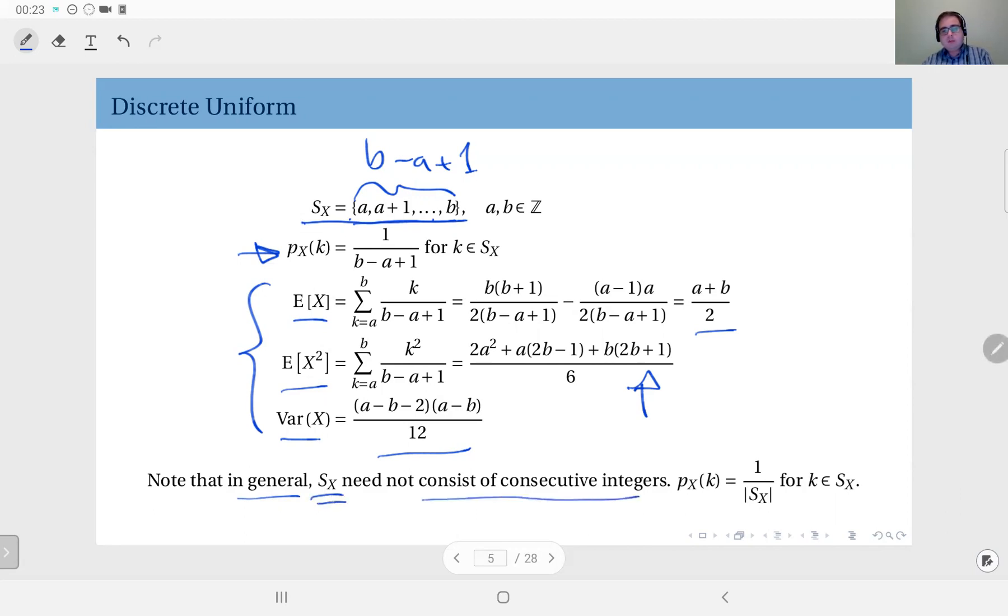Your sample space could be, for instance, the set 1, 1.5, 3, and 75, in which case all probabilities of these outcomes would be 1 over 4. But you see, these formulas are no longer valid. But since this is a simple distribution, you can obtain the statistics quite easily. So this is your probability mass function.